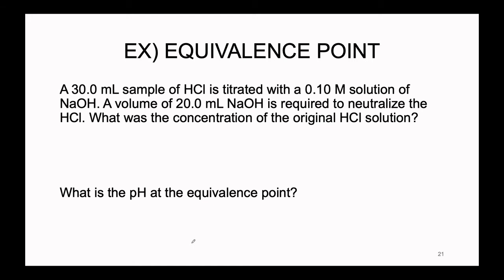Let's look at an example of this equivalence point titration problem from last semester. We have a 30 mL sample of HCl being titrated with a 0.1 molar solution of NaOH. Notice we don't have a concentration for our HCl — it is our unknown. A volume of 20 mL of NaOH was added to neutralize the HCl. Since we are working with a strong acid–strong base neutralization, the reaction is complete: HCl and NaOH completely neutralize each other, giving us salt and water as products.